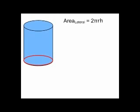Here is the lateral area of a cylinder formula, 2πrh. Notice the similarity of that formula to the circumference of a circle formula, which is 2πr.